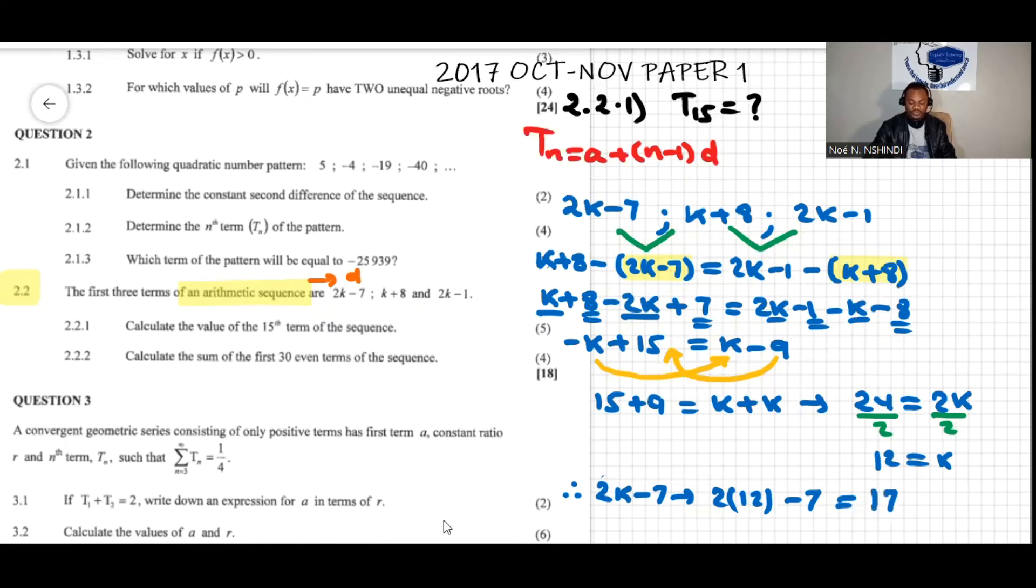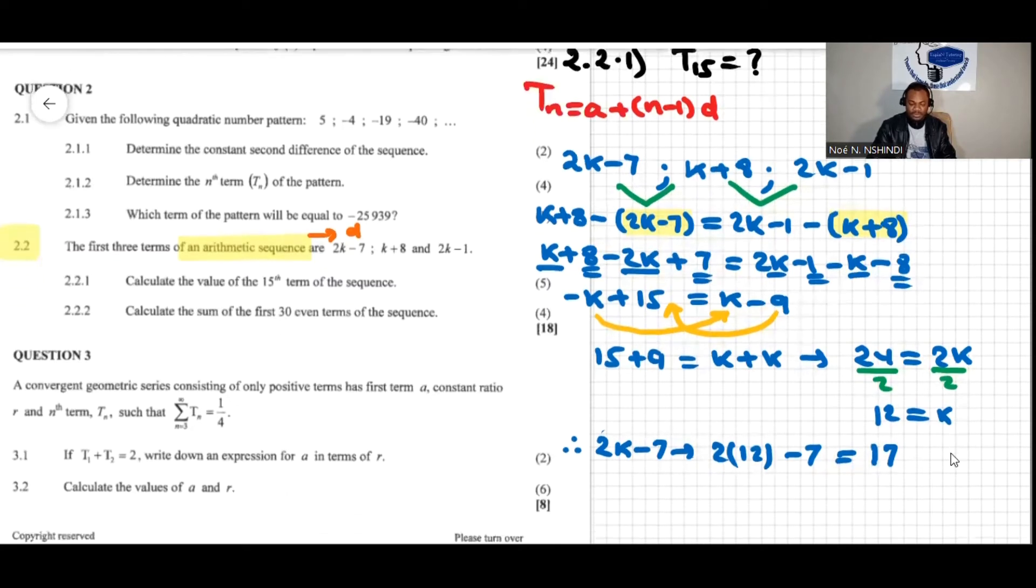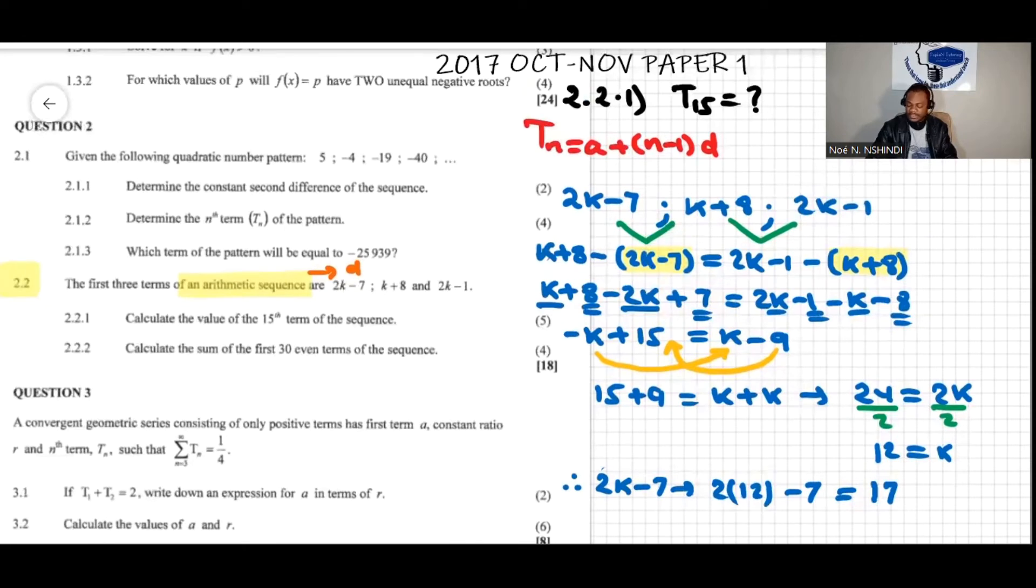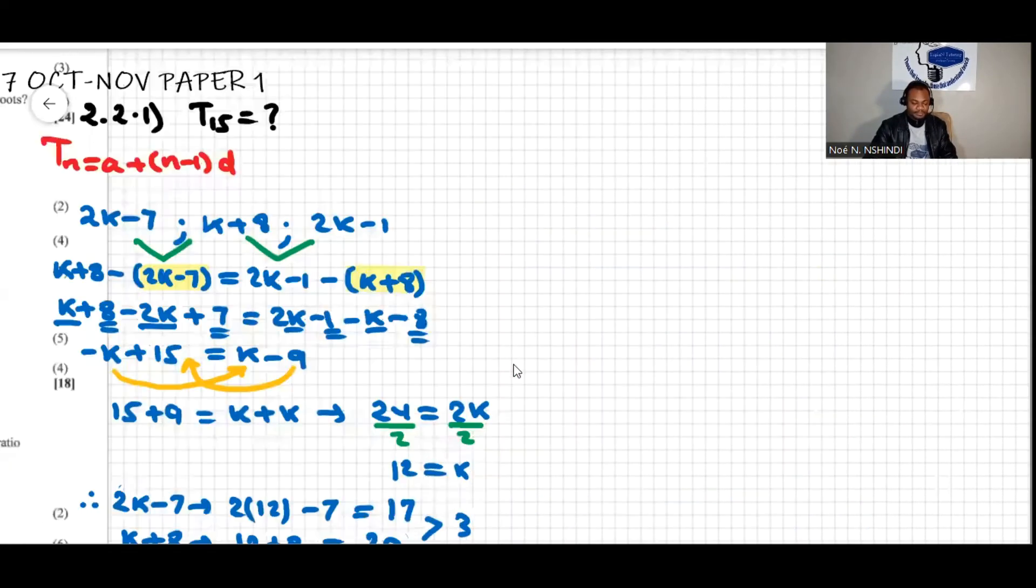We can also find the constant difference. Because we find the value of k we can sub in there to find the value of the second term, which was k plus 8. So k is 12 plus 8, therefore this is 20. The difference here will be the next term minus the previous term, so 20 minus 17 is equal to 3. So that's the difference d.